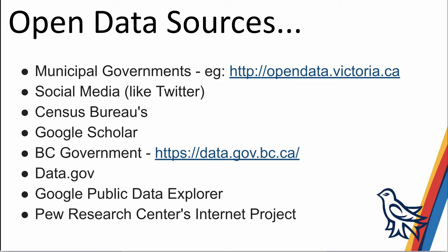There are lots of open data sources. For the Google Maps activity we used parking lot data from the City of Victoria data repository. You can also get data from social media sources like Twitter, the Census Bureau, and the BC government has open data. Google has a great Public Data Explorer which lets you find all sorts of open data to complement your own research. The Pew Research Center also has a number of ongoing research projects on internet and religion-related topics that you can use.